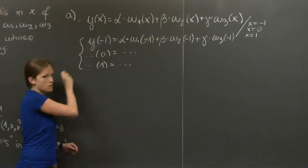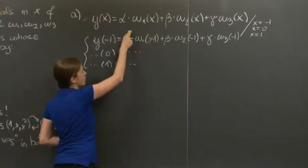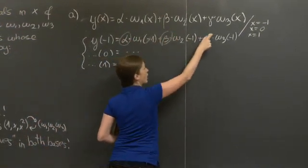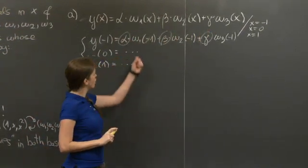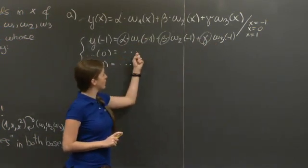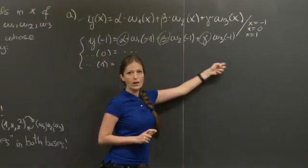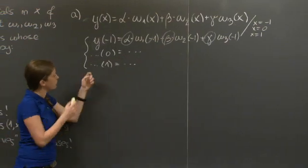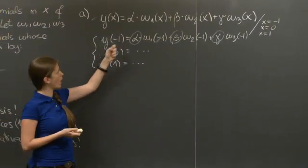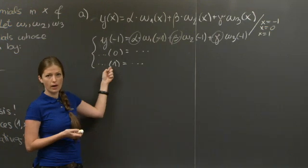And now let me think of this as a linear system that has unknowns alpha, beta, and gamma. Coefficient these values here at minus 1, 0, and 1. And the right-hand side, well, what's written here on the left-hand side. y at minus 1, y at 0, and y at 1.